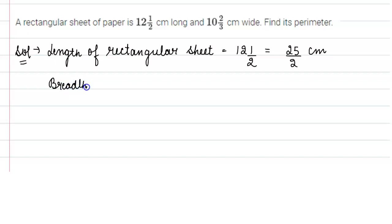Breadth of rectangular sheet - it is also given to us, which is 10 2/3. Change it into an improper fraction: 10 × 3 = 30, 30 + 2 = 32, so it's 32/3 centimeters.